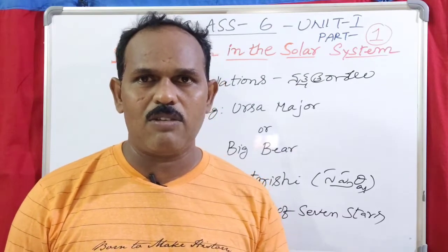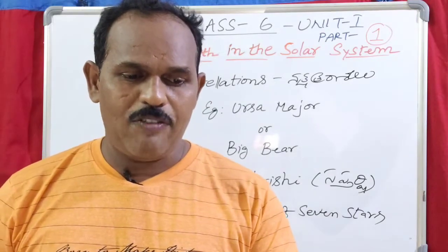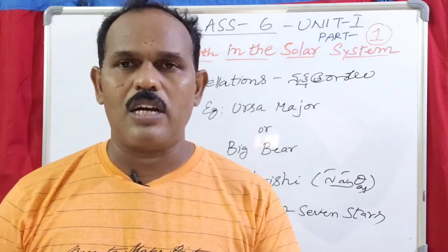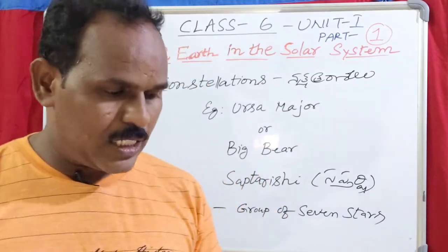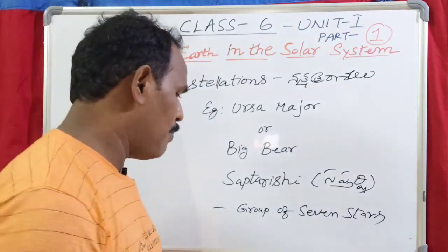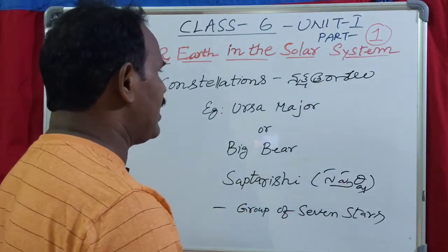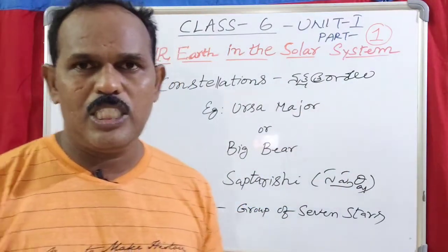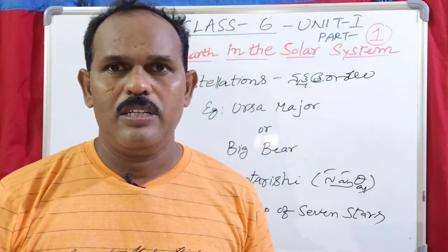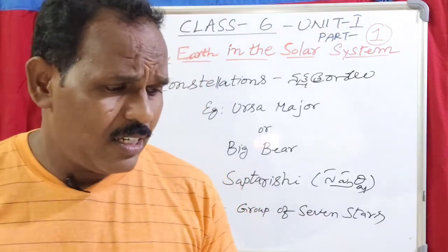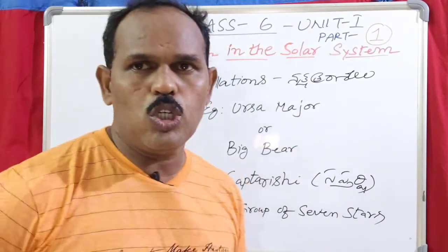Have you ever noticed the various patterns formed by different groups of stars in the sky? Those are called constellations. They were named after different animals, objects, and creatures depending on the shape they look. For example, this is also called Ursa Major.